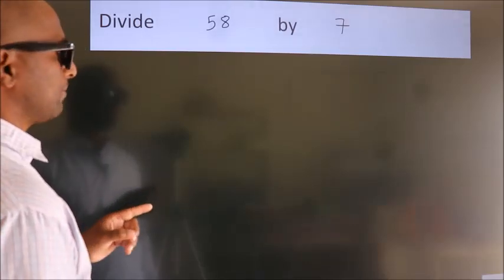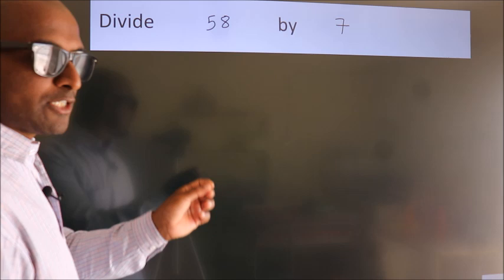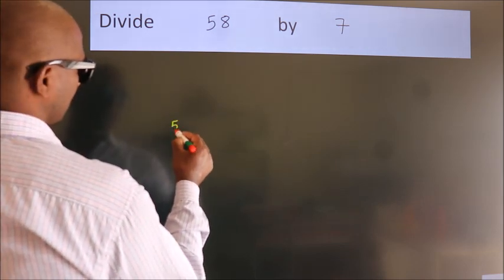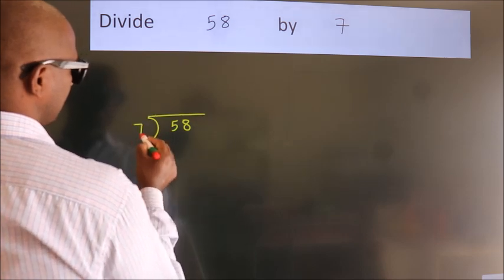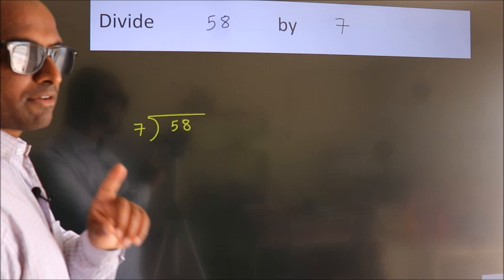Divide 58 by 7. To do this division, we should frame it in this way. 58 here, 7 here. This is your step 1.